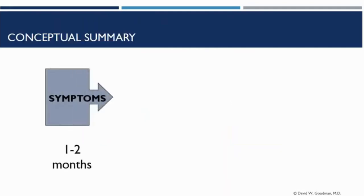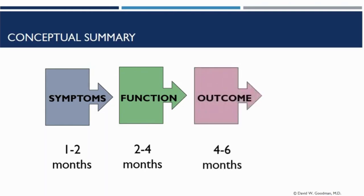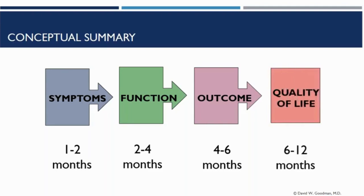Let's summarize conceptually. In the first two months, the focus is very much on getting the symptoms under control. In months two to four, your function improves — you realize you're able to do things better and rely on yourself. In months four to six, you really start noticing the outcomes: your work review is better, your relationships are better, your confidence is better, you're less impulsive. And when you get to six to twelve months, your quality of life is clearly improving — not only in the present, but you're imagining that the quality of your life in the future can be better, because the world opens up in regards to the opportunities you now feel you can undertake.